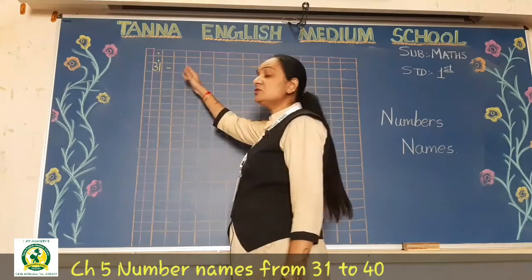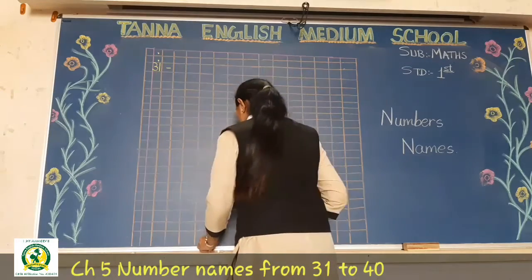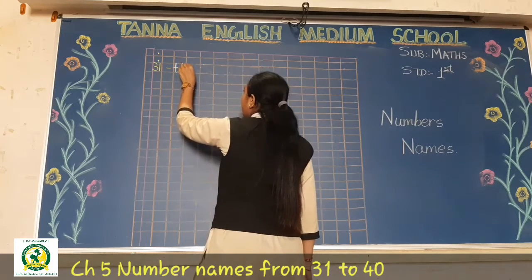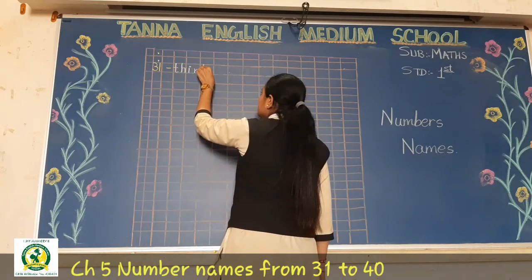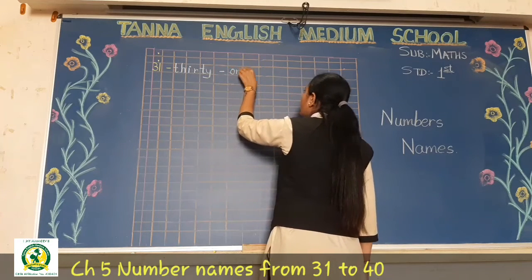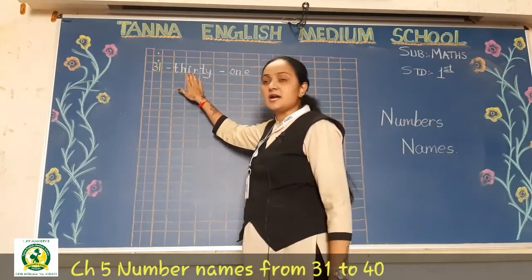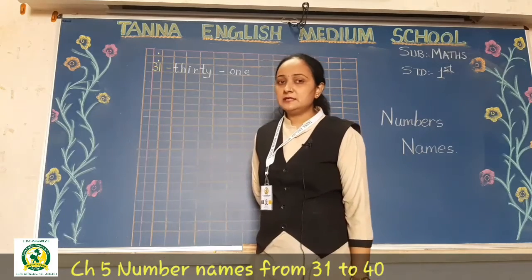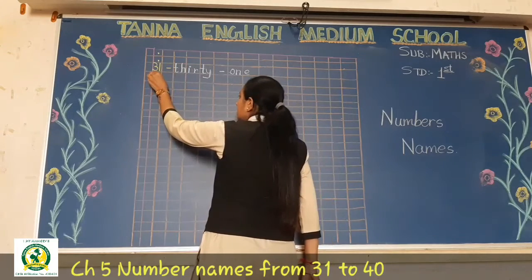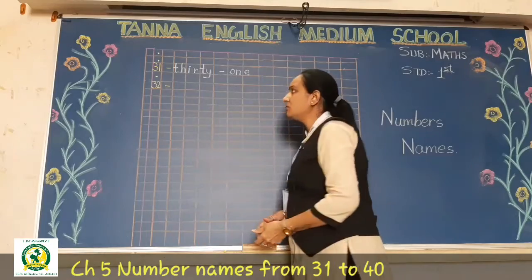Write 31, touching the top and bottom lines, within one box. Now we will write the number name — one box, two letters. Write T-H-I-R-T-Y for 30, and then O-N-E for 1. So here you know the spelling of 30: T-H-I-R-T-Y. Now 31 is done — return. One box leave and then write 32 with a hyphen.